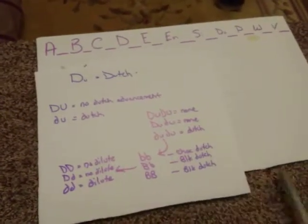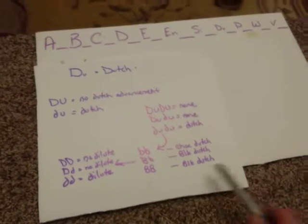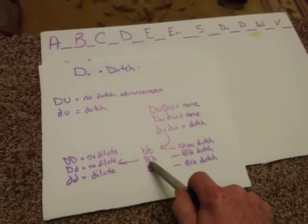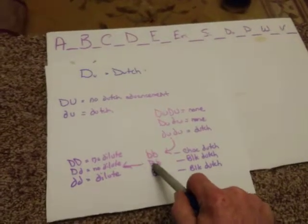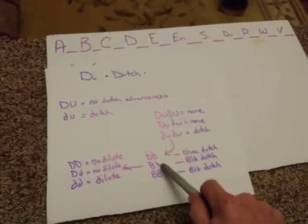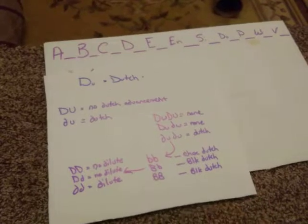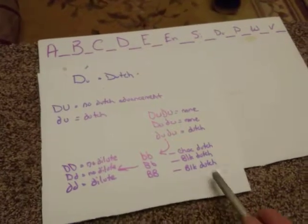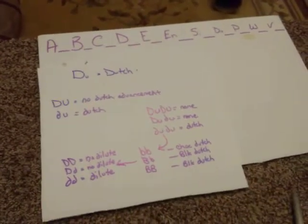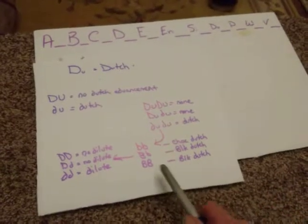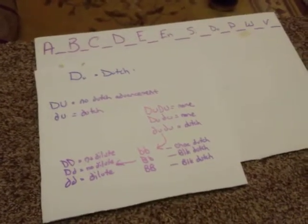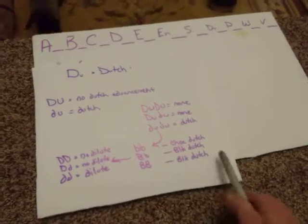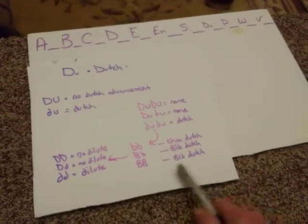We're going to get a chocolate Dutch. If we get one dominant, which is the capital B for black, and one chocolate, because the black is more dominant than the chocolate, the black is going to present in the color and we're going to get a black Dutch rabbit. The same likewise, if we have two copies of the dominant black, we're going to get a black Dutch rabbit.